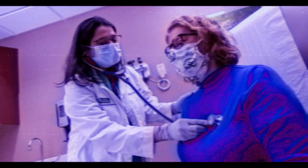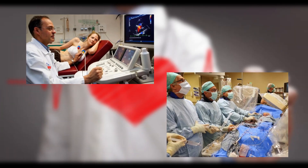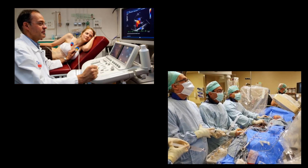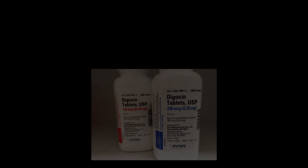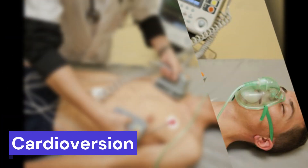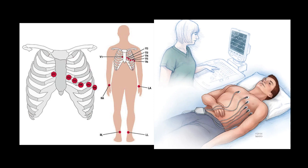In many cases, a junctional rhythm does not require treatment. However, if the patient is experiencing symptoms, treatment options may include medications such as beta blockers, calcium channel blockers, or digoxin. In some cases, electrical cardioversion may be necessary to restore a normal heart rhythm. The diagnosis of a junctional rhythm is made by performing an EKG.